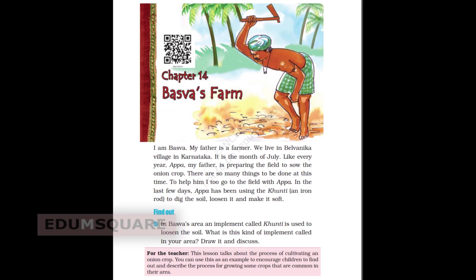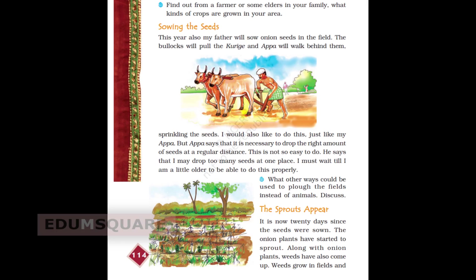You may want to write what kind of implement is used to soften the soil in your area. Then find out from a farmer or some elders in your family what kind of crops are grown in your area. Next, sowing the seeds — this year also, my father will sow onion seeds in the field. The bullocks will pull the plough and Appa will walk behind them.